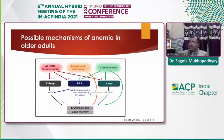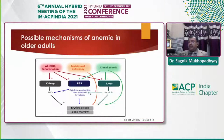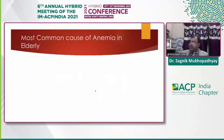The mechanisms of anemia in older patients are complex. The three important organs associated with it are the kidney, reticuloendothelial system, and liver. Increased inflammation leads to erythropoietin resistance in the bone marrow. Increased production of cytokines like interleukin-6, interleukin-2, TNF-alpha, and fibroblast growth factor beta leads to decreased erythropoiesis and bone marrow depression. In the liver, increased production of hepcidin due to inflammation leads to reduced iron absorption from the gut and reduced production of blood cells.